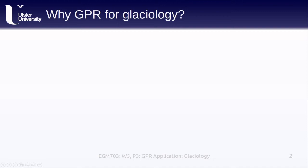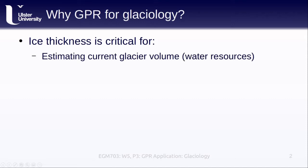One of the biggest applications of GPR in glaciology has been to measure ice thickness. Ice thickness is a critical measurement for estimating current glacier volumes in order to understand current water resources. It's also necessary for glacier and ice sheet modeling in order to be able to project changes into the future.